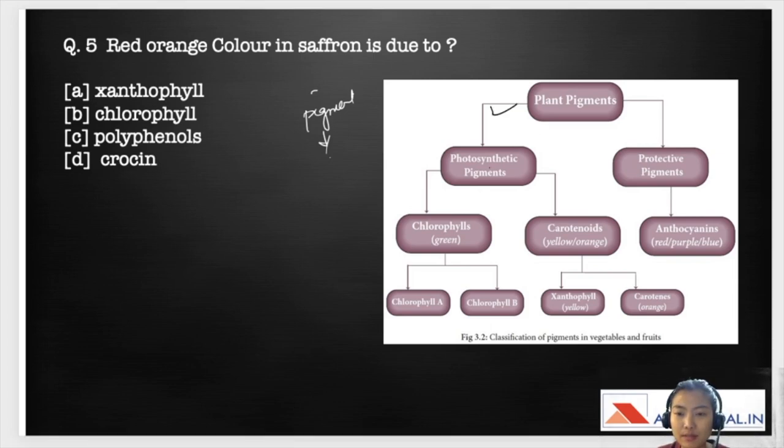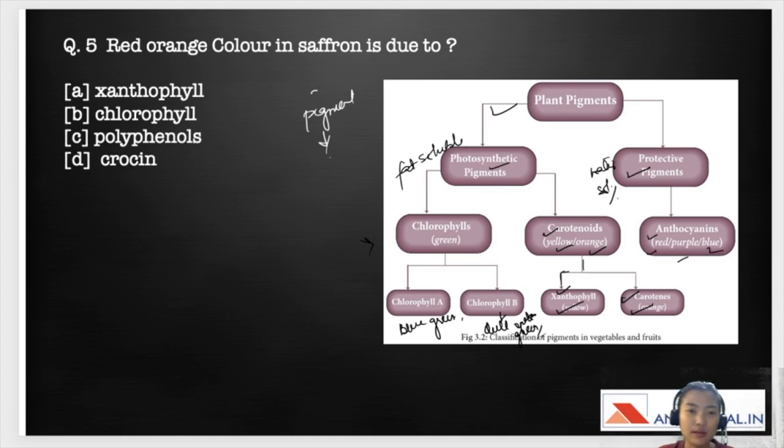Here, the plant pigment is divided into photosynthetic pigments and protective pigments. Under photosynthetic pigments, we have chlorophylls and we have carotenoids. These two are mostly fat-soluble. And these anthocyanins are water-soluble. These chlorophylls can be further divided into chlorophyll A and chlorophyll B. So chlorophyll A imparts a blue-green color whereas chlorophyll B imparts a dull yellow-green color. Further, these carotenoids impart a yellow-orange to reddish colors. And these can be divided into xanthophylls and carotenes. Xanthophylls impart yellow color and carotenes impart orange color. Under protective pigments, we have anthocyanins. Anthocyanins impart a red, purple, or blue color.